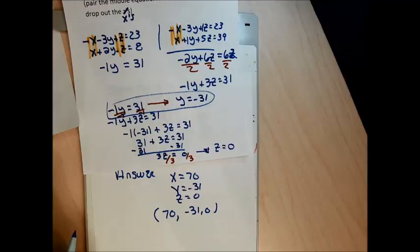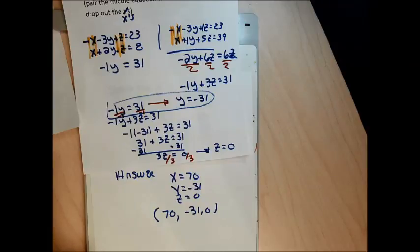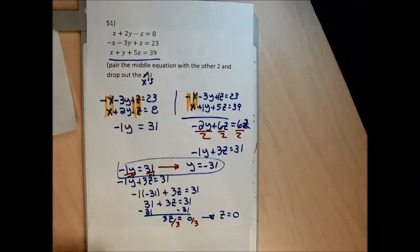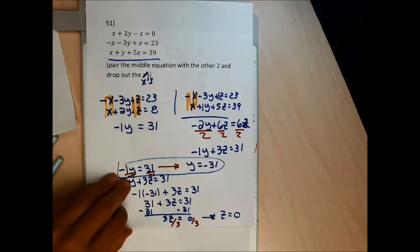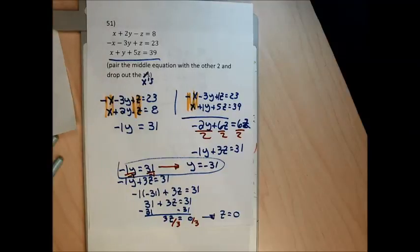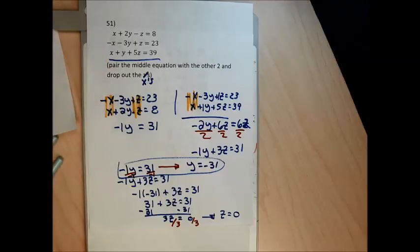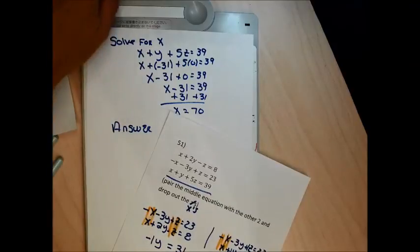Problem 51 had a trick in it — two letters canceled at once in one pair — which we hadn't been exposed to before. That's the end of the section. Hopefully you feel okay about having three equations and three unknowns. I'll always give you the first step on the test, and it's just a matter of following through to finish.